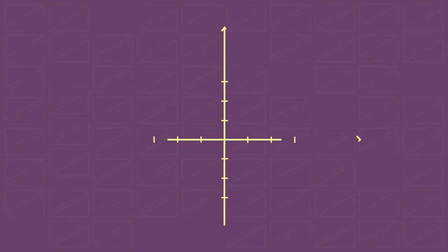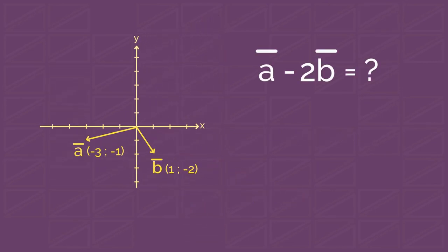And now let's use this new knowledge. There are two vectors, vector A with coordinates (-3,-1) and vector B with coordinates (1,-2). Find this vector and its magnitude.